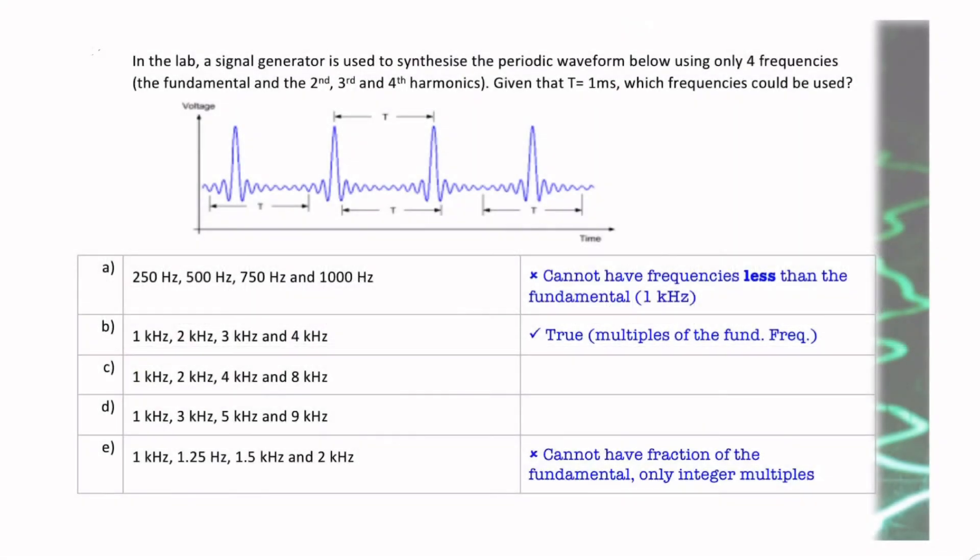Here we're told that we use a signal generator to synthesize a periodic waveform, but we're only allowed to use four frequencies. So we don't have an infinite number of harmonics. We can only use four frequencies, which means four harmonics. And we're told that the four harmonics we're using is not just any four harmonics, it's the fundamental and the second, third, and fourth harmonic.